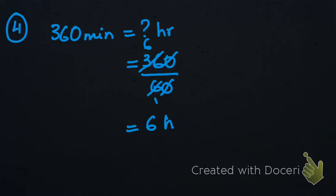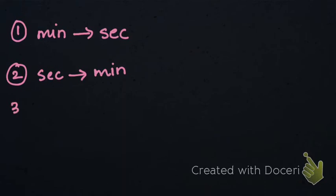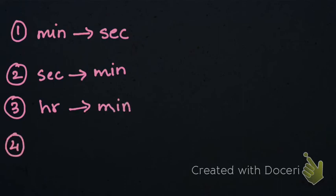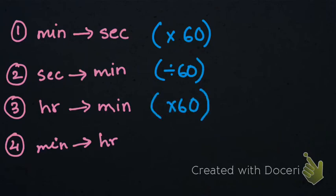Let's do a little recap. First we had conversion from minutes to seconds, then from seconds to minutes, then from hours to minutes, and last from minutes to hours. From minutes to seconds we multiply by 60. From seconds to minutes we divide by 60. From hours to minutes we multiply by 60. And from minutes to hours we again divide by 60.